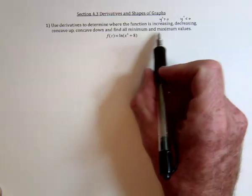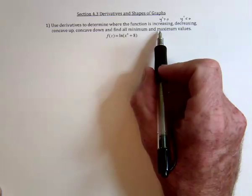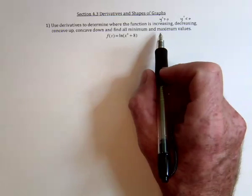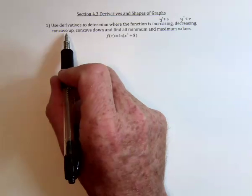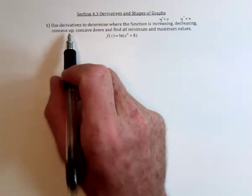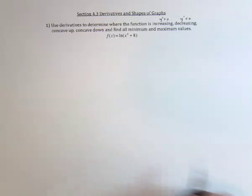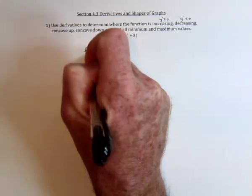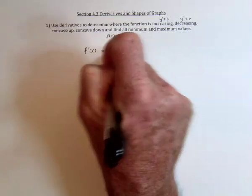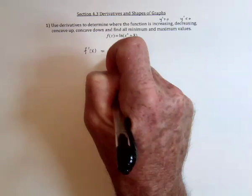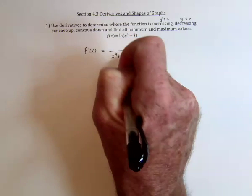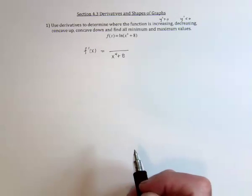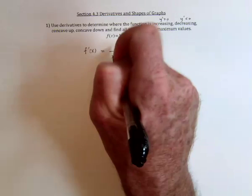And then, once we know that, we can find out where there are minimums and maximums, then use the second derivative to find out if it's concave up or concave down. So for the derivative, the derivative of natural log is going to start off with 1 divided by the argument, and then the chain rule says take the derivative of the argument.